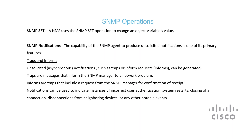SNMP Set allows you to tweak the data that a device is storing. SNMP Notifications are alerts from agents to the manager about any significant happenings without being prompted. Traps send out alerts about network issues, while Informs are like traps but also look for confirmation back from the manager.